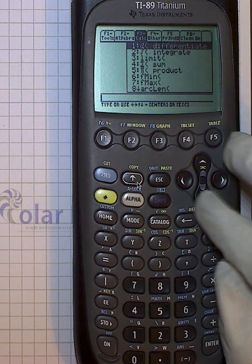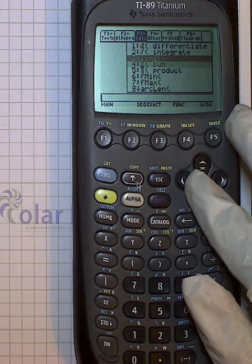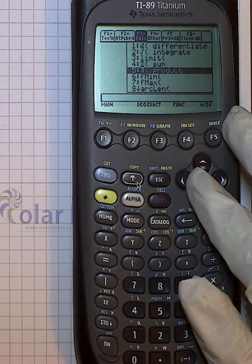One is limits, two is sums, and three is products.